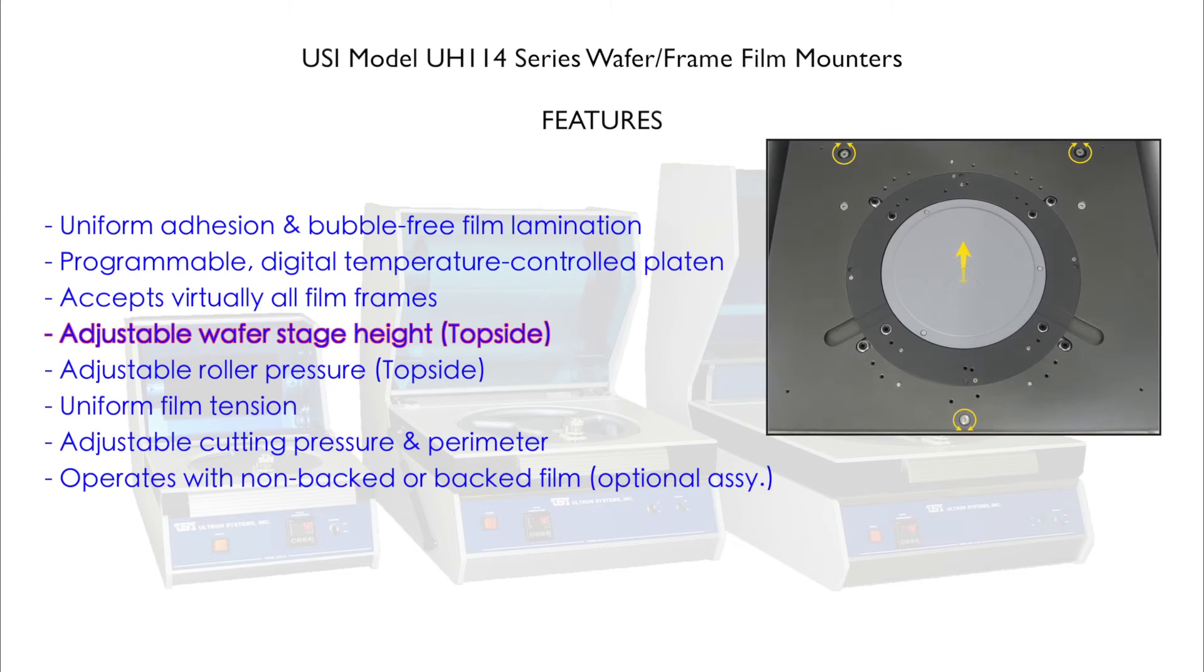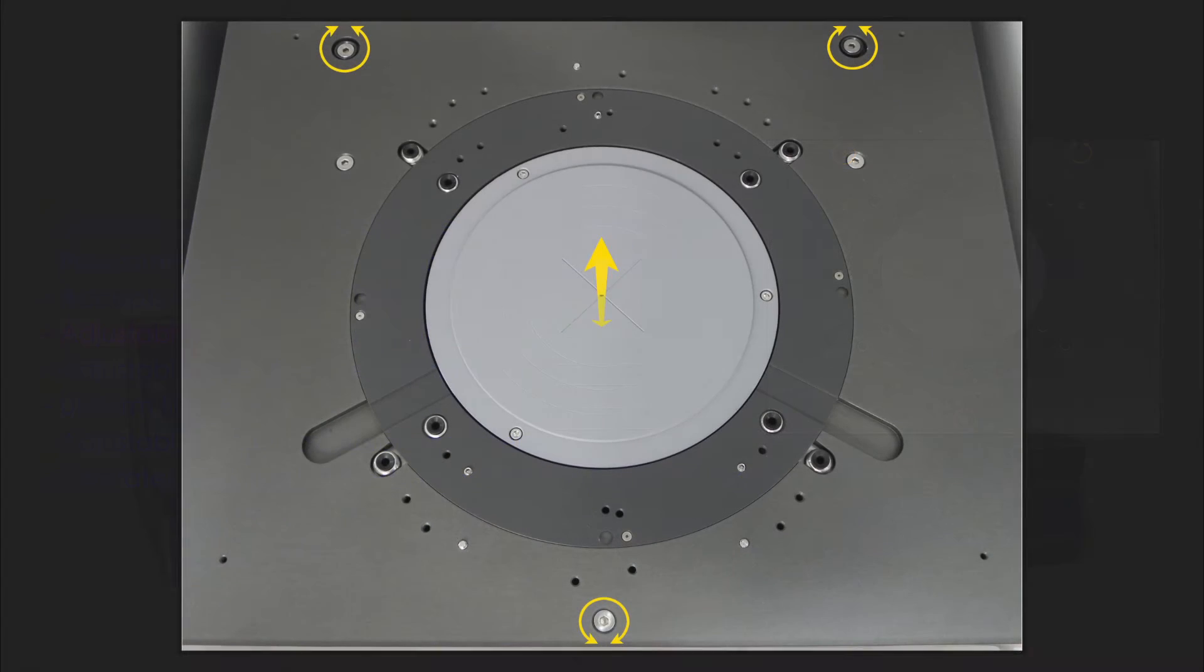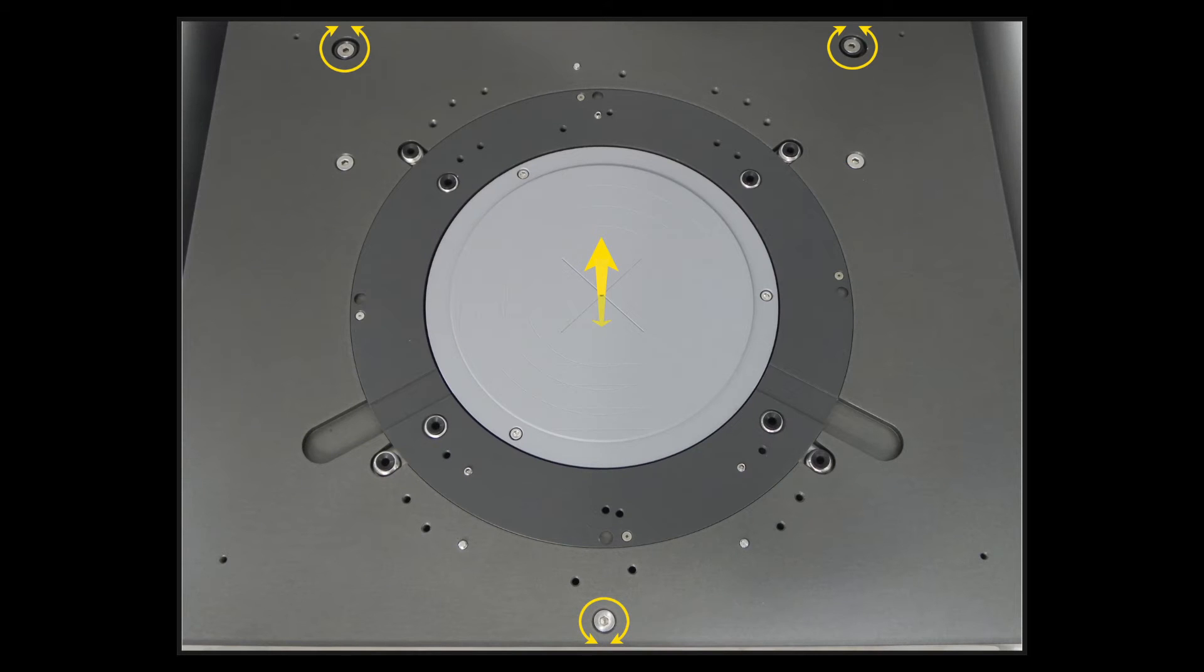Adjustable wafer stage height. The work stage height is adjustable relative to the frame height to accommodate different wafer thicknesses. This easily accessible top-side adjustment is quickly modified by simply turning three screws.